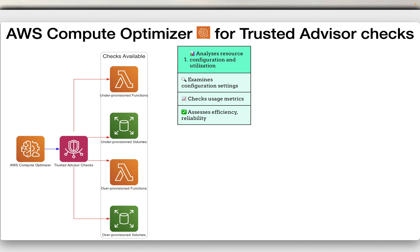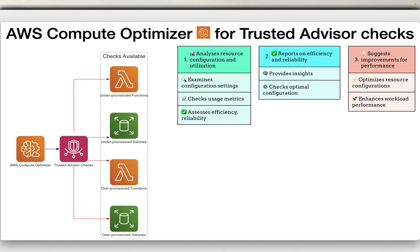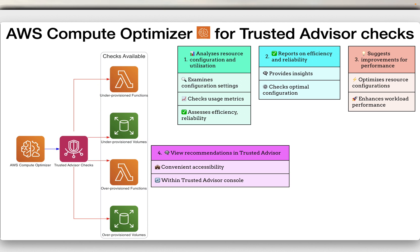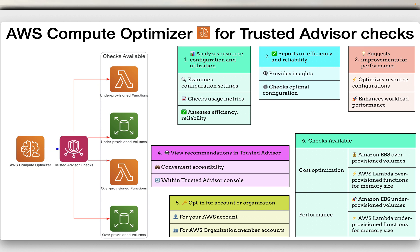AWS Compute Optimizer is also integrated with Trusted Advisor checks. The service provides insights into whether your resources are optimally configured for efficient and reliable operation, and offers recommendations on how to enhance the performance of your workloads by optimizing resource configuration. These optimization recommendations from Compute Optimizer are conveniently accessible within the Trusted Advisor console. You can enable Compute Optimizer for just your AWS account or extend it to all member accounts within an AWS organization. Available checks span two categories: cost optimization — including Amazon EBS over-provisioned volumes and AWS Lambda over-provisioned functions for memory size — and performance, including Amazon EBS under-provisioned volumes and AWS Lambda under-provisioned functions for memory size.